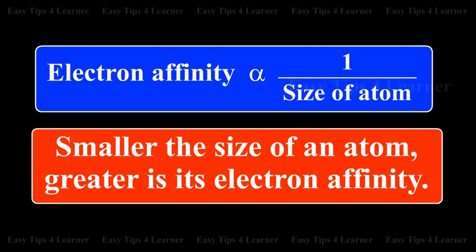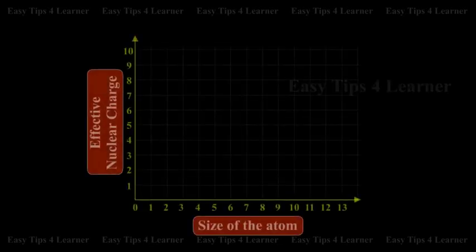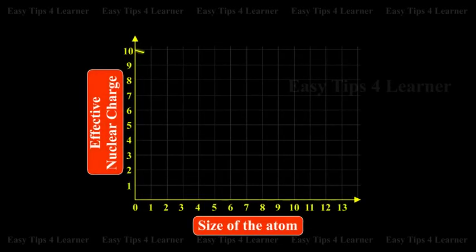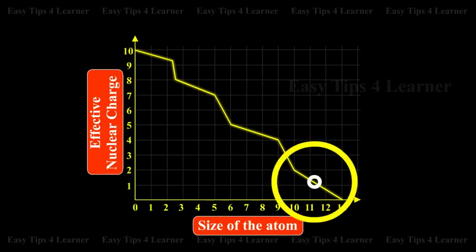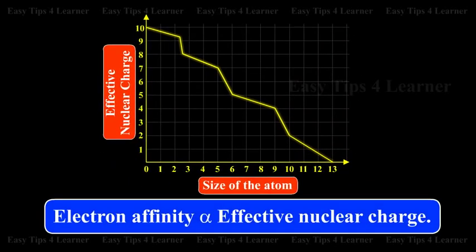Smaller the size of an atom, greater is its electron affinity. As the size of an atom increases, the effective nuclear charge decreases, or the nuclear attraction for adding an electron decreases. Therefore, electron affinity is proportional to effective nuclear charge.